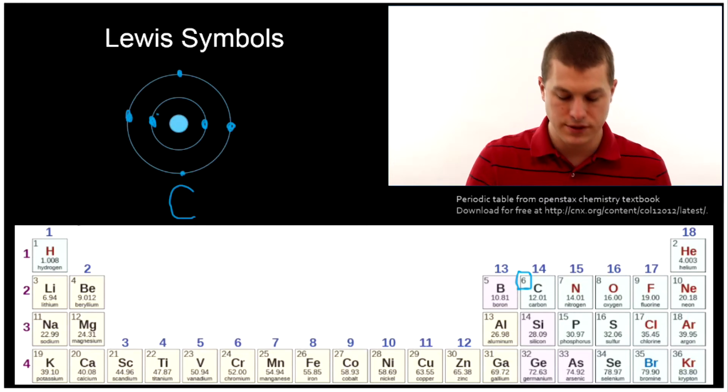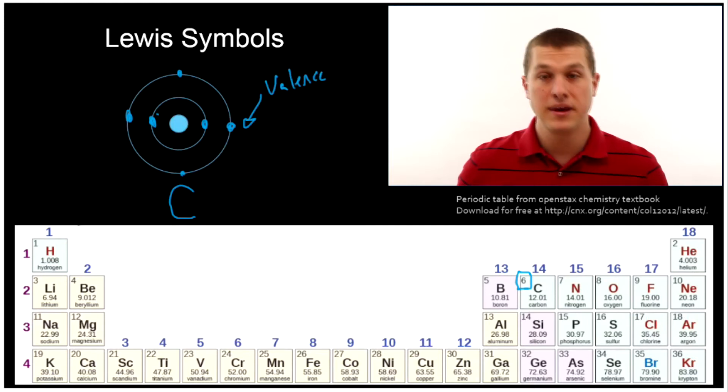And those outer ones we call valence electrons. And because they're on the outside they participate in bonding, they interact with atoms around them and that makes the valence electrons really important.